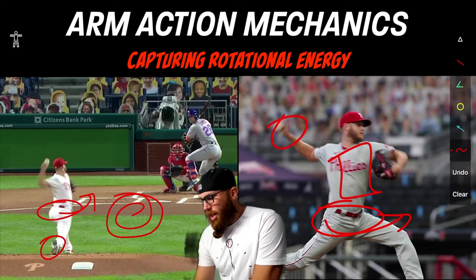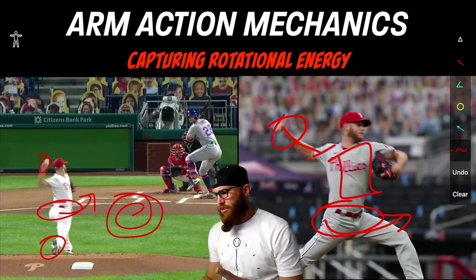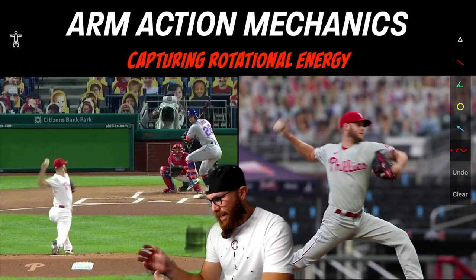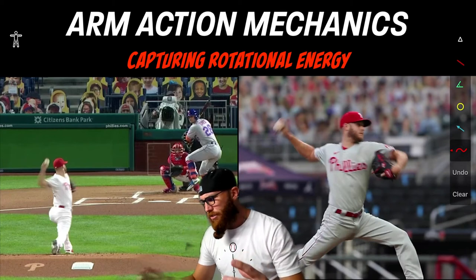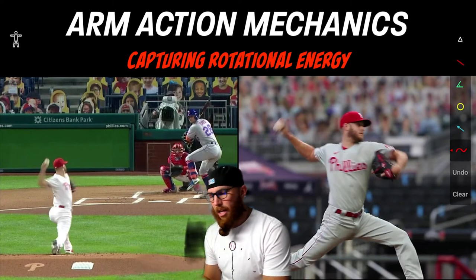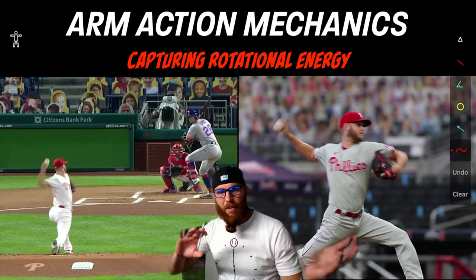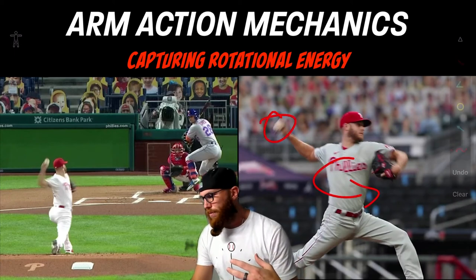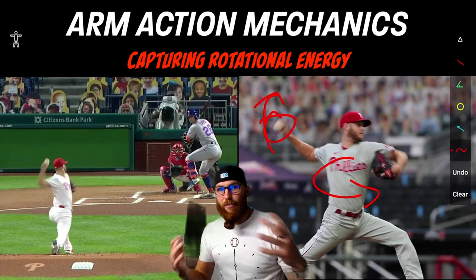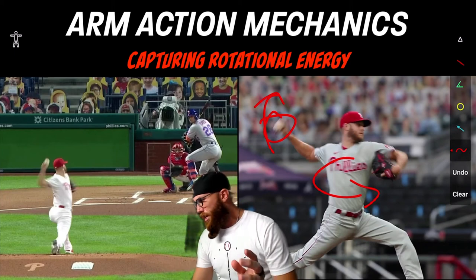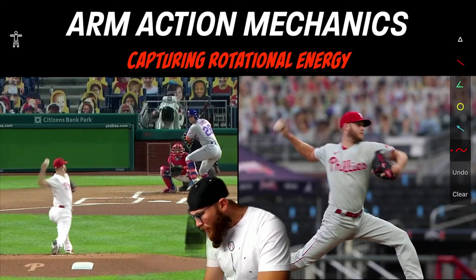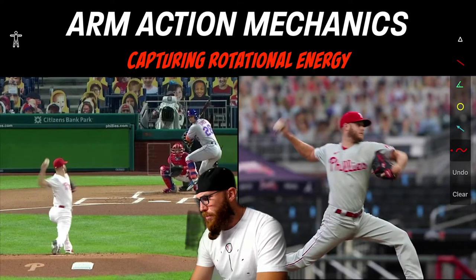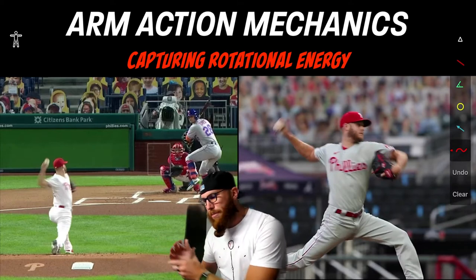The timing and positioning of the arm action as it pertains to capturing rotational energy — with a guy like Zach Wheeler he's going to have a very high amount of rotational energy due to his ability to segment so well. For every individual it will look a little different; some trunks will initiate earlier, and the arm action may potentially influence the trunk to go early, limiting the rotational energy to capture. Perfect world scenario: we get into position by creating segmentation and hip rotation mechanics at the right time.